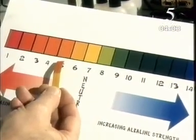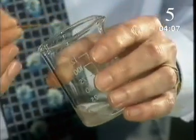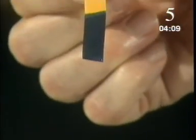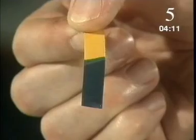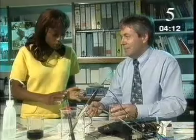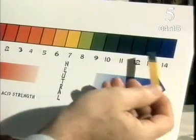Here I've got some ordinary household bleach. If we test this again — wow, that's very blue, greenish. So that's an alkaline. Alkali. Right.